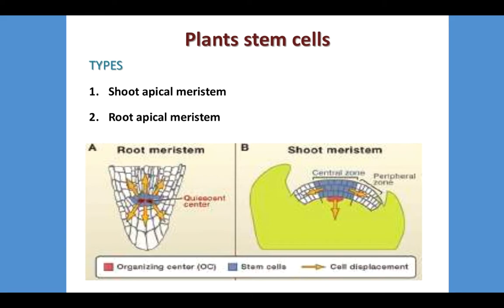As far as the types of plant stem cells are concerned, there are two main types. One is shoot apical meristem and the second is root apical meristem. As you all know, there are two fundamental parts of an angiospermic flowering plant: the shoot and the root. Both parts have meristem, or we can say plant stem cells. Here you can see the blue portion of the root apical meristem as well as shoot apical meristem, which is made up of stem cells or meristematic cells.